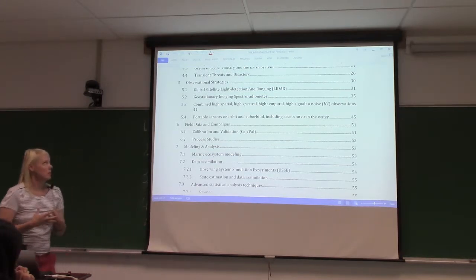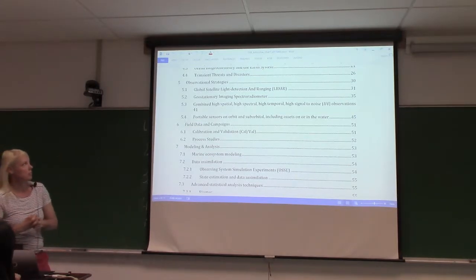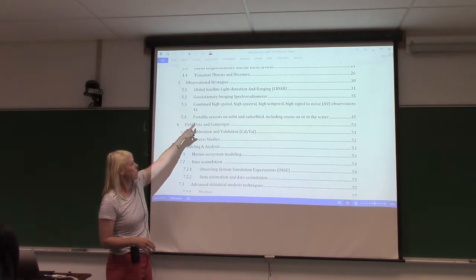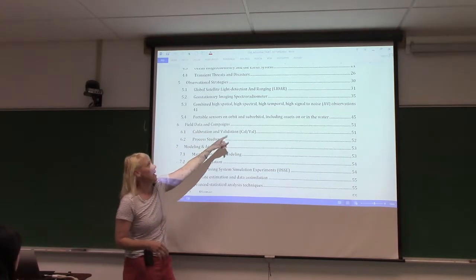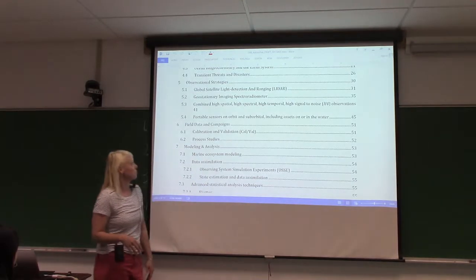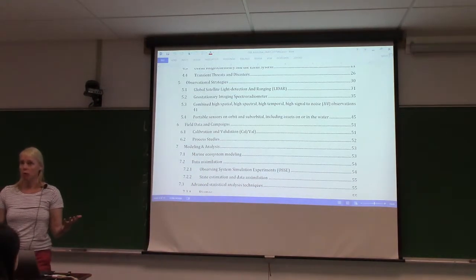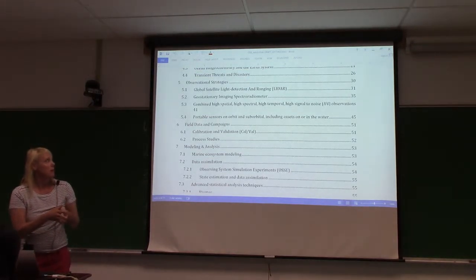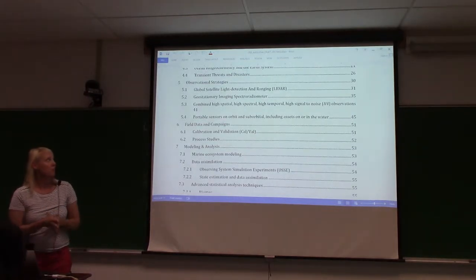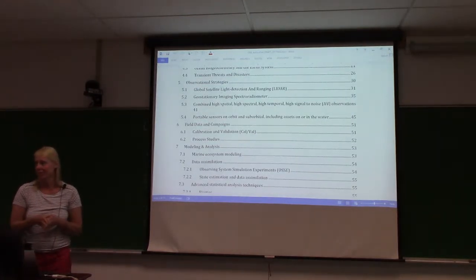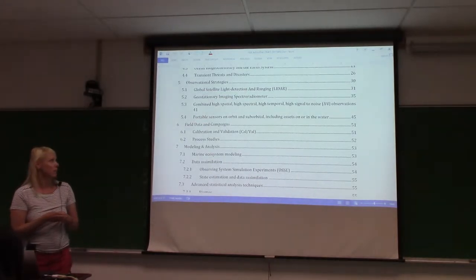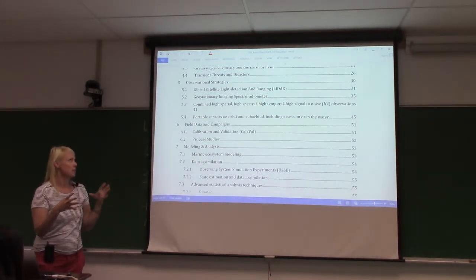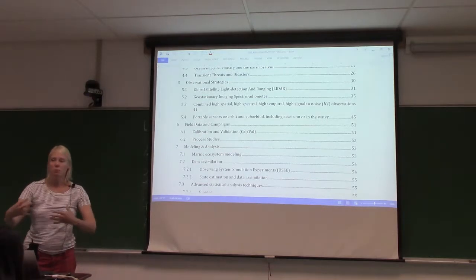But we're working as a community to try to come up with ideas to get a sequence of sensors. The third one here is combined high spatial, high spectral, high temporal, and high signal to noise observations. That's probably what we would really need to do a lot of the work we want to do in these boundary habitats. That's a tall order.